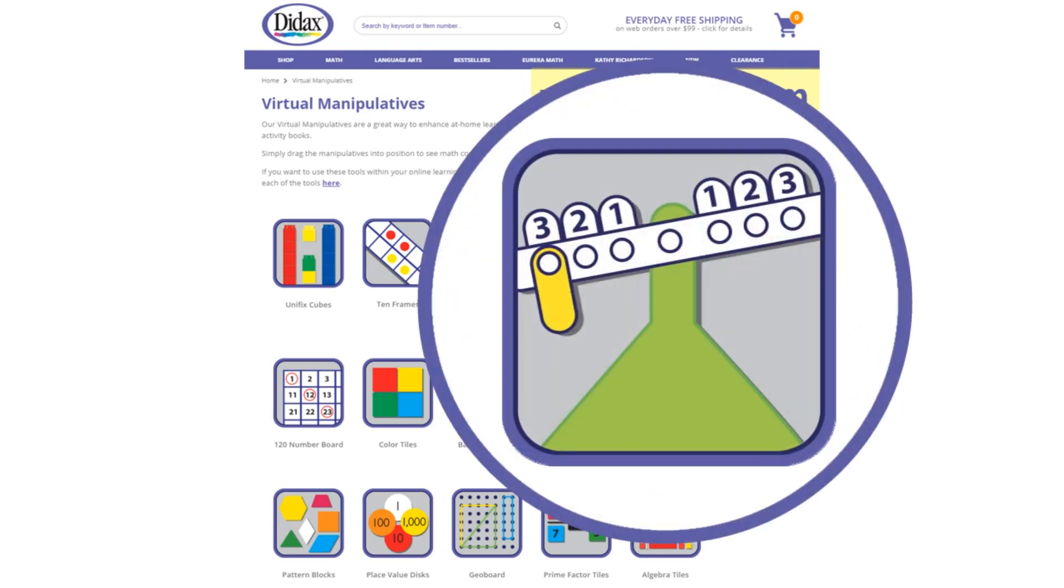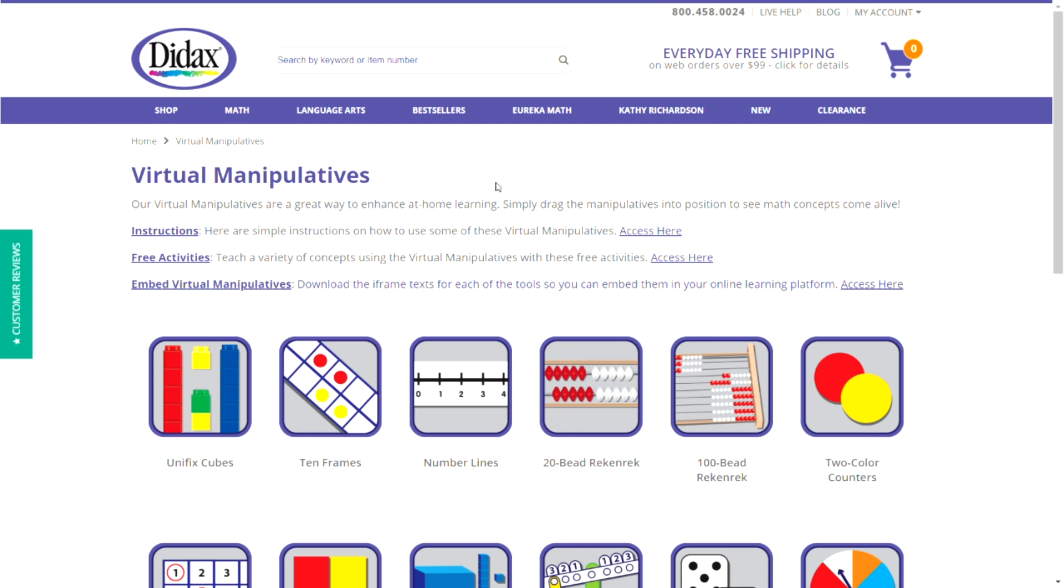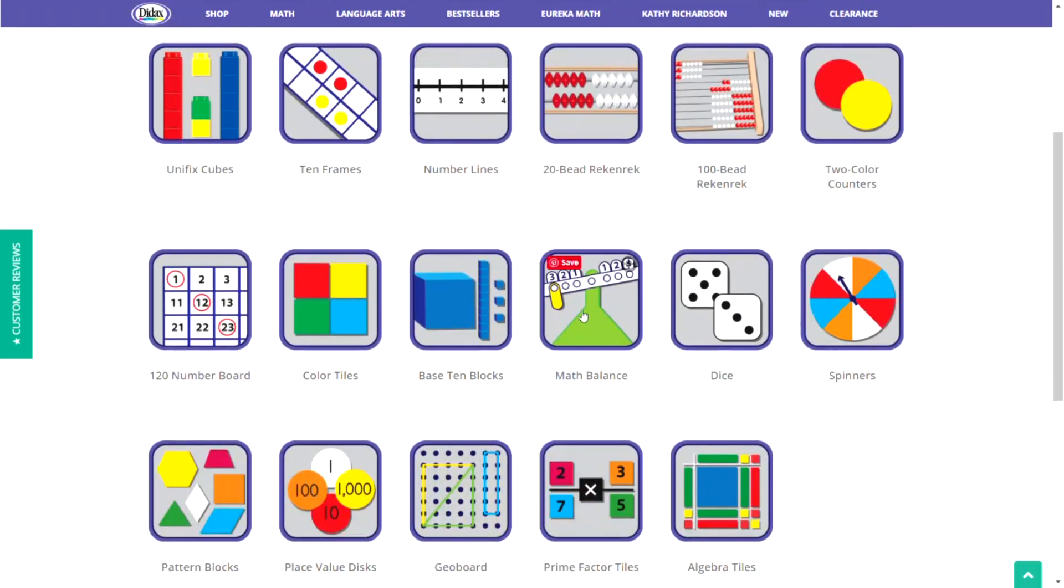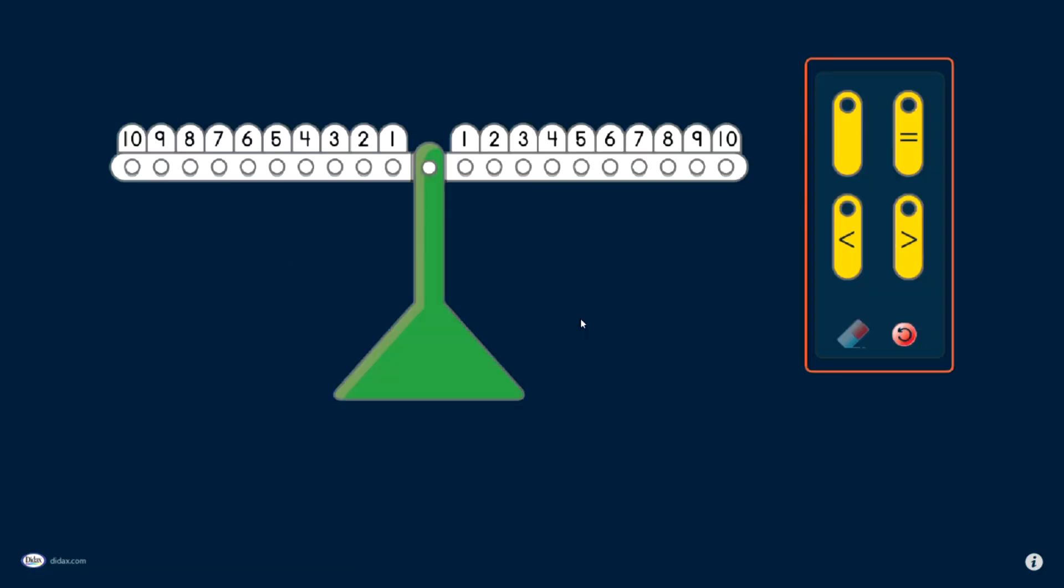Let's take a closer look at the Math Balance. From the Virtual Manipulatives page, I'm going to navigate down to the Math Balance tool. When I click on the link, it will open in a new window. And I have a Math Balance.